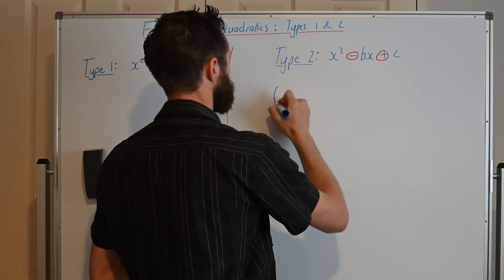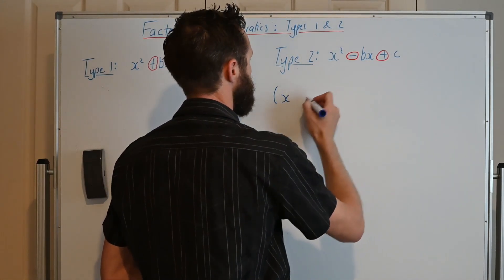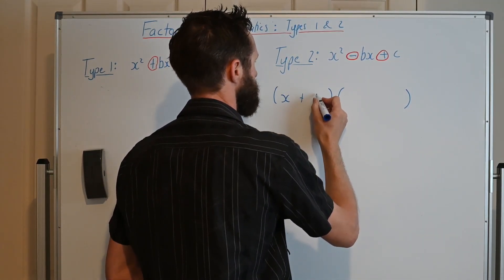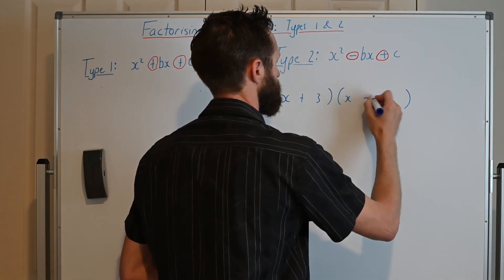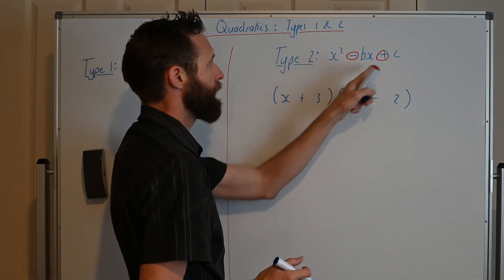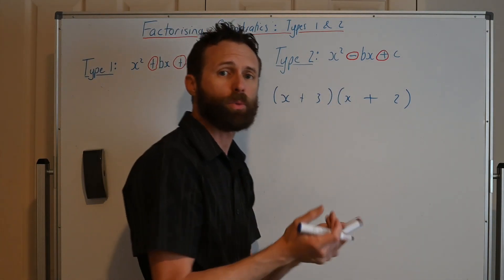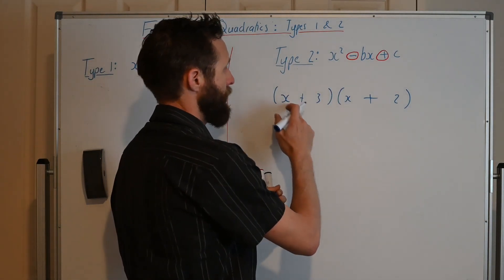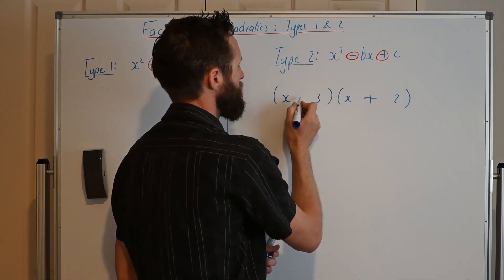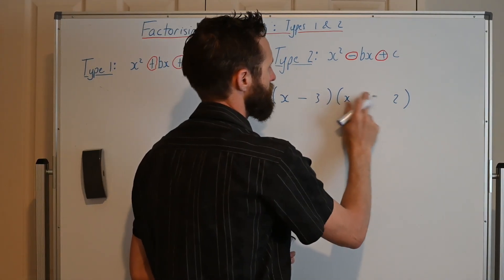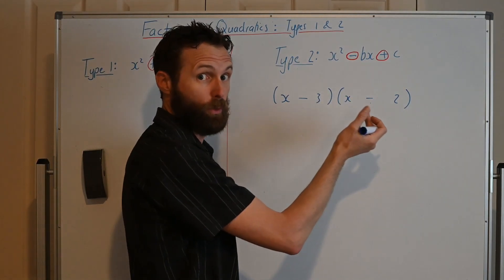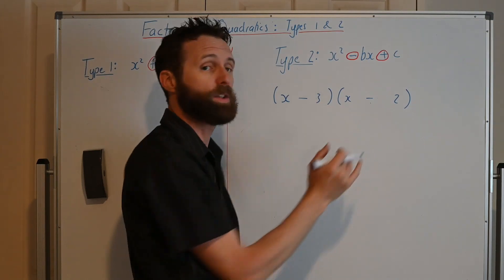How can we get a plus with our last number? Well, one of the ways you've seen is if you had something like this, (x + 3)(x + 2). We get 3 times 2 is positive 6. But if we have two positives here, there's no way we can get a negative when we add those numbers together because 2x plus 3x is 5x. But another way that we can get a positive number at the end is if our two brackets have negatives in them.